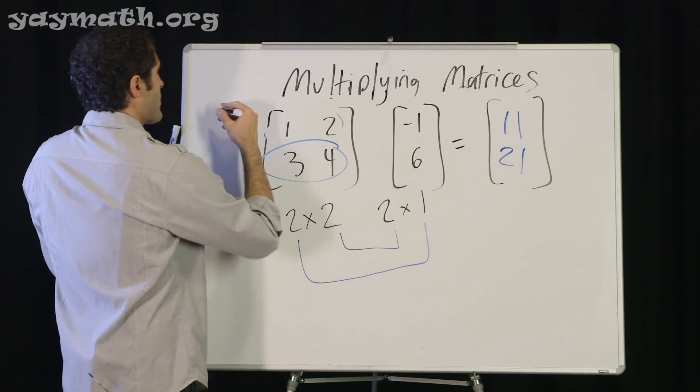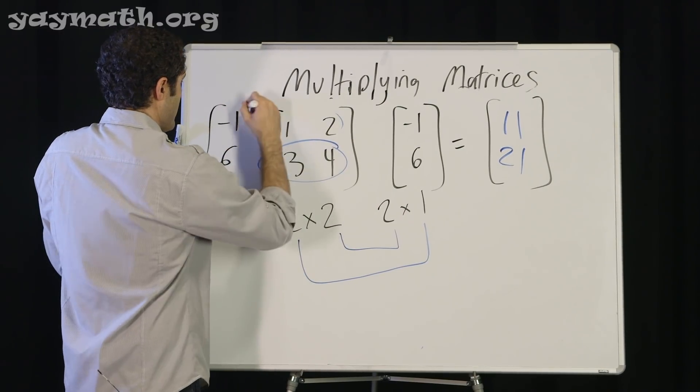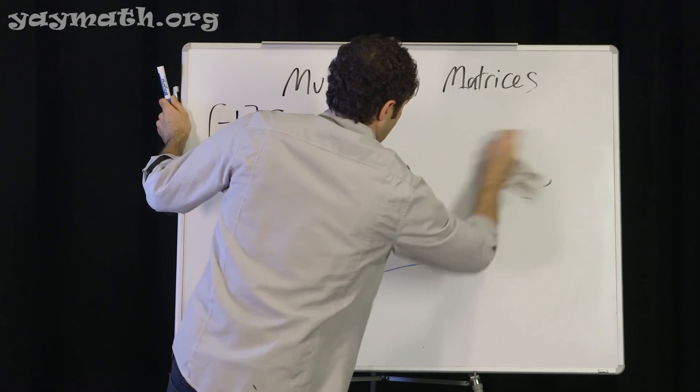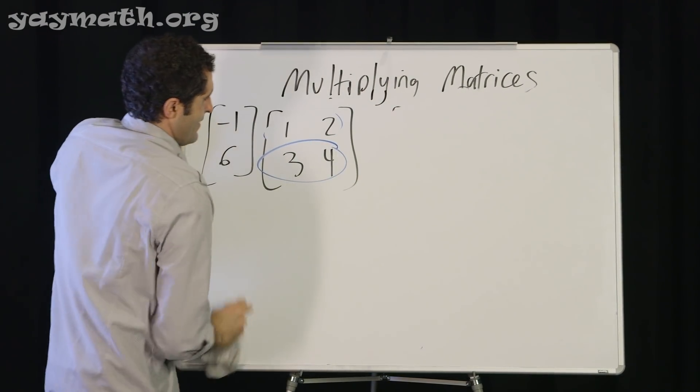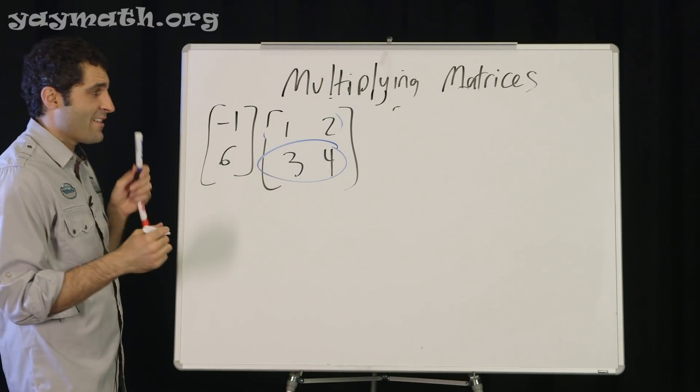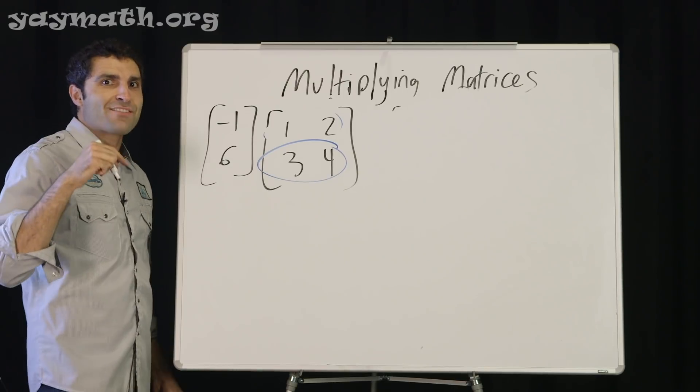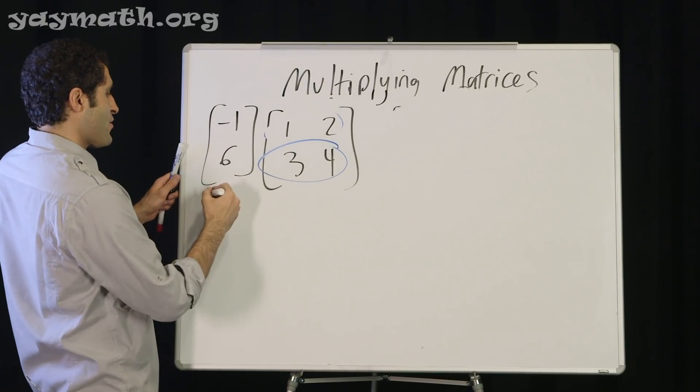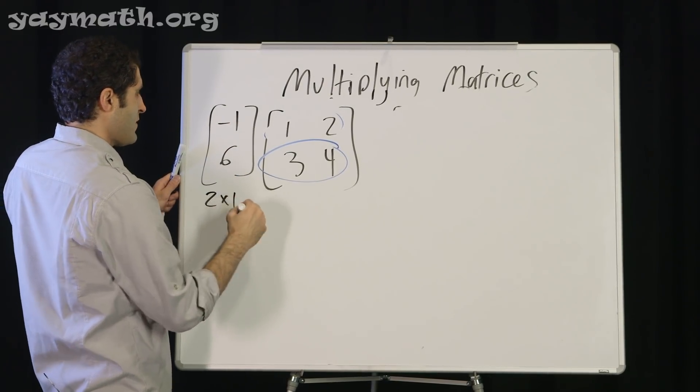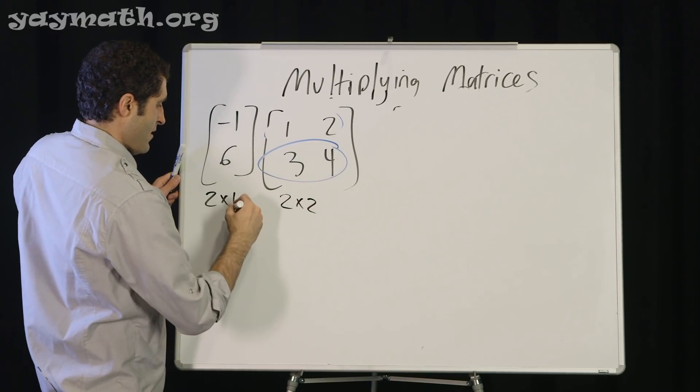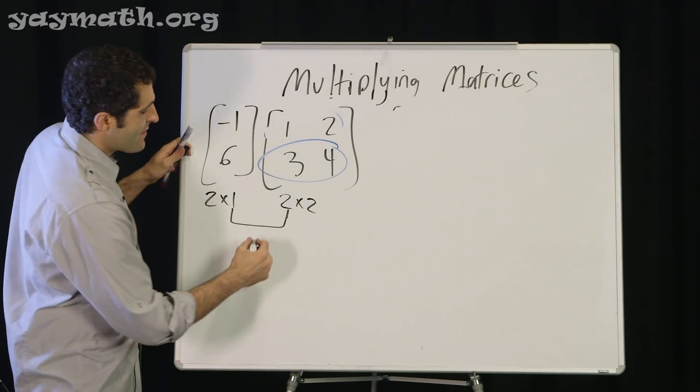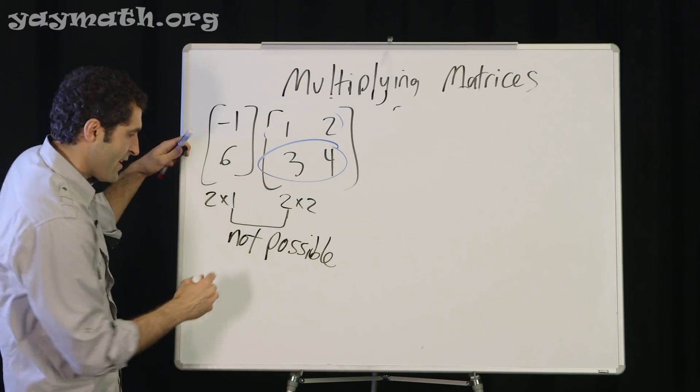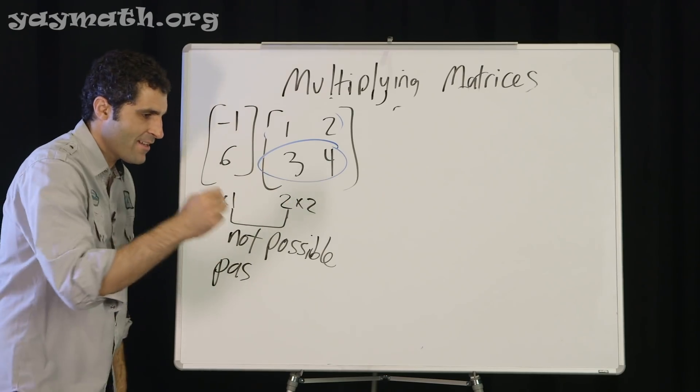Let me ask you a question though. In the books and stuff, they say multiply these two, if possible. What is this? Rows by columns. This is two by one. Rows by columns, two by two. Do these numbers link up? They don't. That means not possible. For our French audience, pas possible. Not possible.